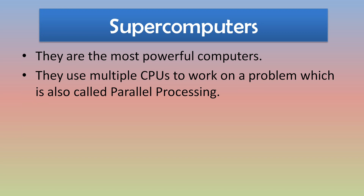They use multiple CPUs to work on a problem — multiple CPUs are used to perform a single task. This process is also called parallel processing, where multiple CPUs are used together to sort out a problem or execute a program.